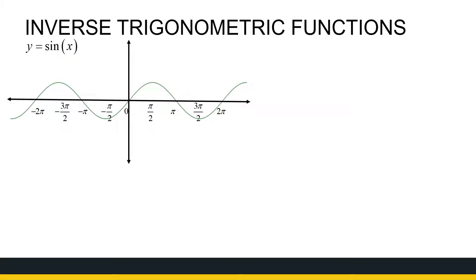I've got the sketch of sine of x there. Hopefully you remember that if I want an inverse function, my original function has to be one-to-one. Now sine of x is definitely not one-to-one. I could pick many y values and notice there are multiple x values mapped onto them. It's actually infinite because this wave just keeps carrying on. So for any of those y values between minus one and one, there's an infinite number of x values mapped onto it. So sine of x as it stands does not have an inverse function because it's not one-to-one.